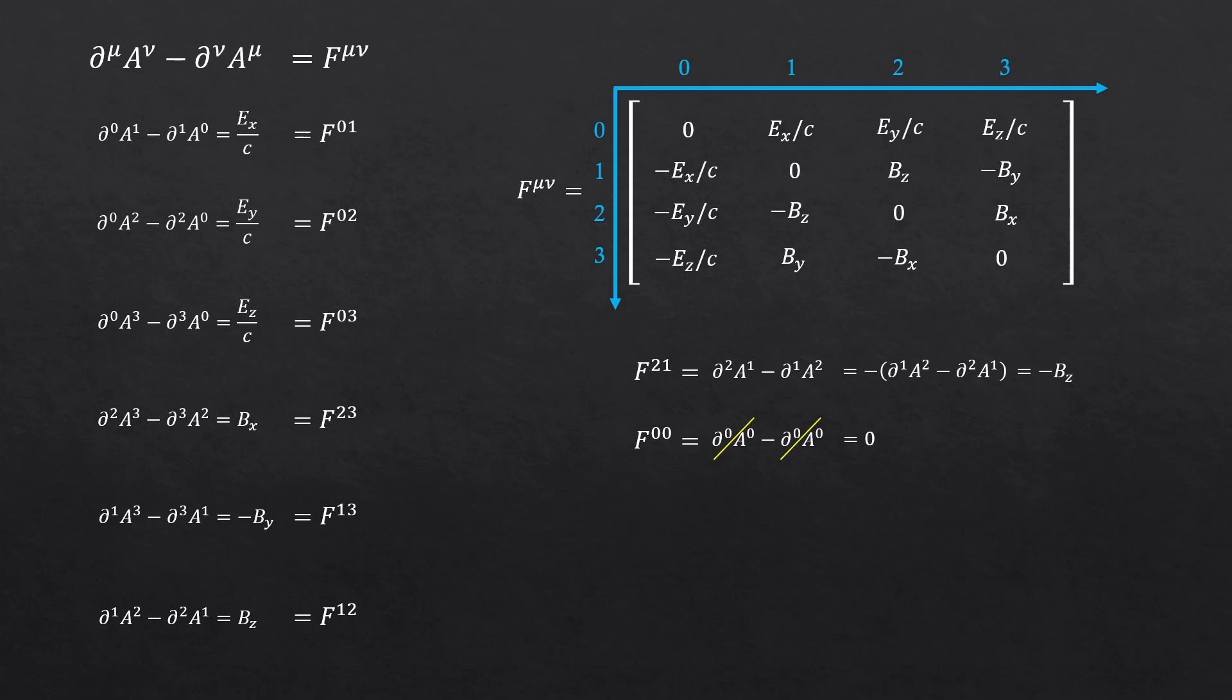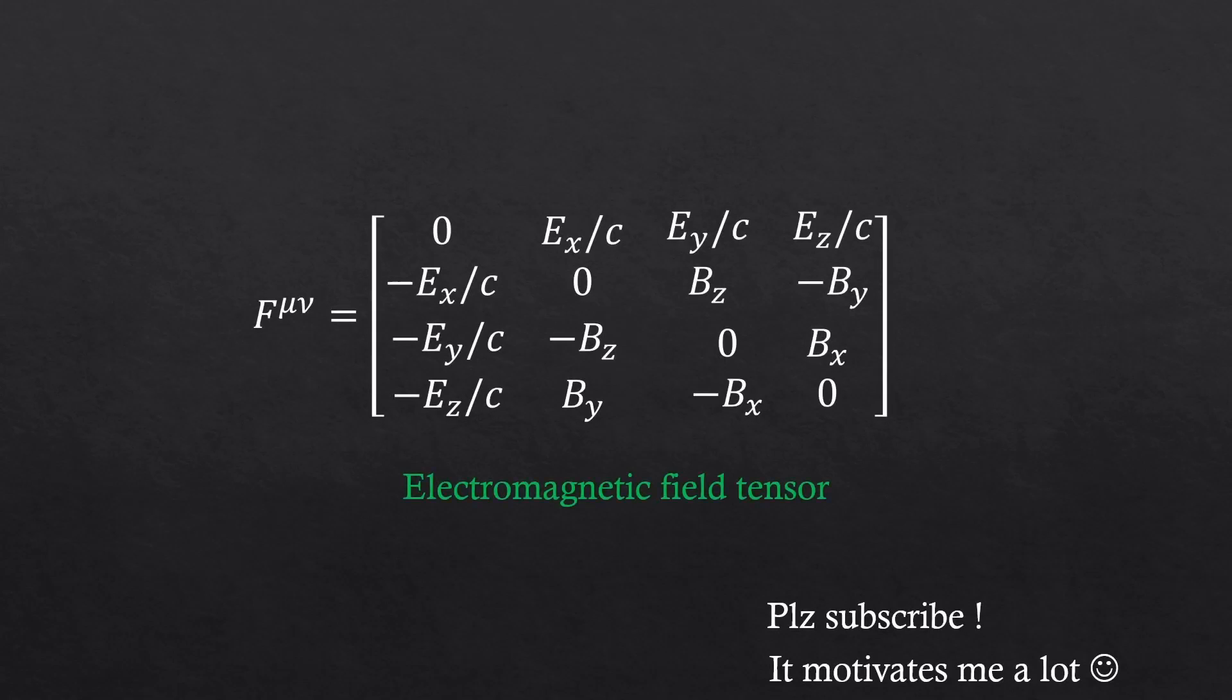By the way, if you still want to know what d0a0 was, a0 is scalar potential over c, and d0 is the negative 1 over c d over dt. So, time derivative of the scalar potential. What does this describe? I guess it just describes how the scalar potential changes over time. Nothing really interesting. Anyway, we have successfully derived this tensor by ourselves. Congrats!